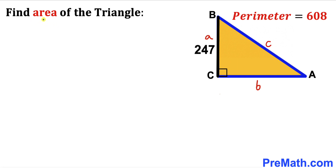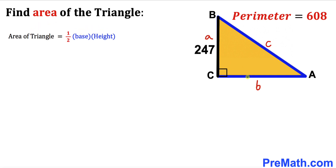Since we are interested in calculating the area of triangle ABC, let's recall the area formula: area equals one-half times base times height. Side AC is our base and side BC is our height, so we must find the value of side b to calculate the area.